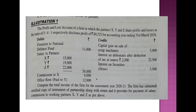Looking at the problem, the net profit of the firm is 80,525. From the debit side we have donation to the National Defense Fund, salary to partners, and commission to X — all of these are inadmissible expenses. The income not taxable under the business head includes the capital gain and income from other sources.